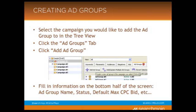The next thing to do would be to create ad groups, which is very similar to creating a campaign. First, you select the campaign in the tree view that you want to add the ad groups to. Then you click the ad groups tab, and then you click add ad group. Just like before, you fill in the information at the bottom of the screen. You're going to assign an ad group name, decide whether you want it to be paused or live right now, and then give a default max CPC bid. This is the highest that you want any individual keyword to cost you per click in any particular bidding instance.